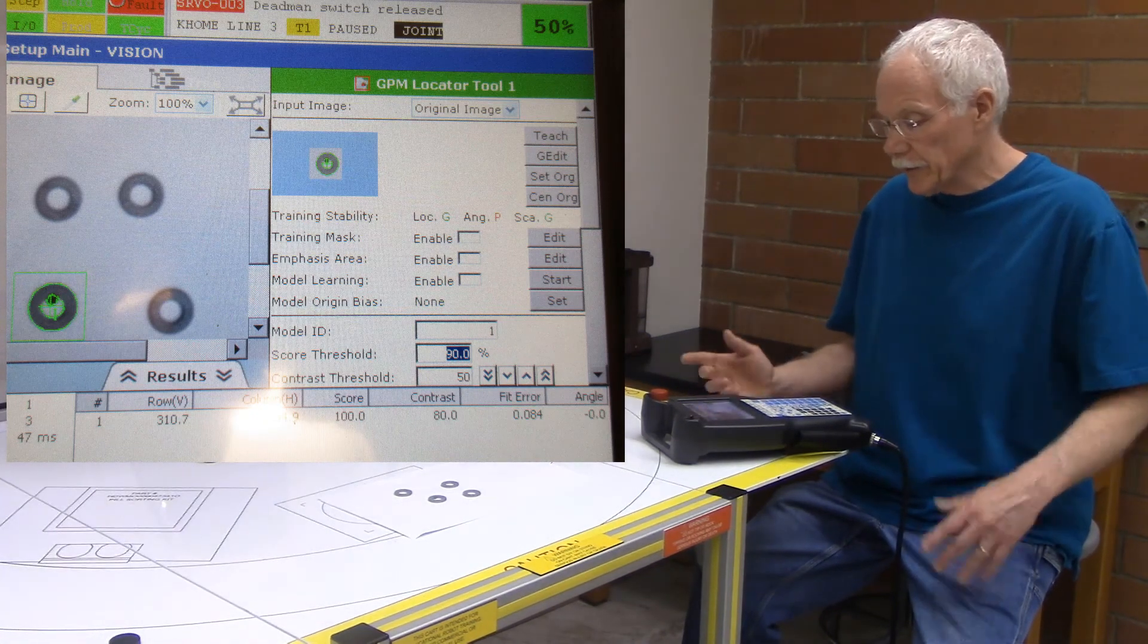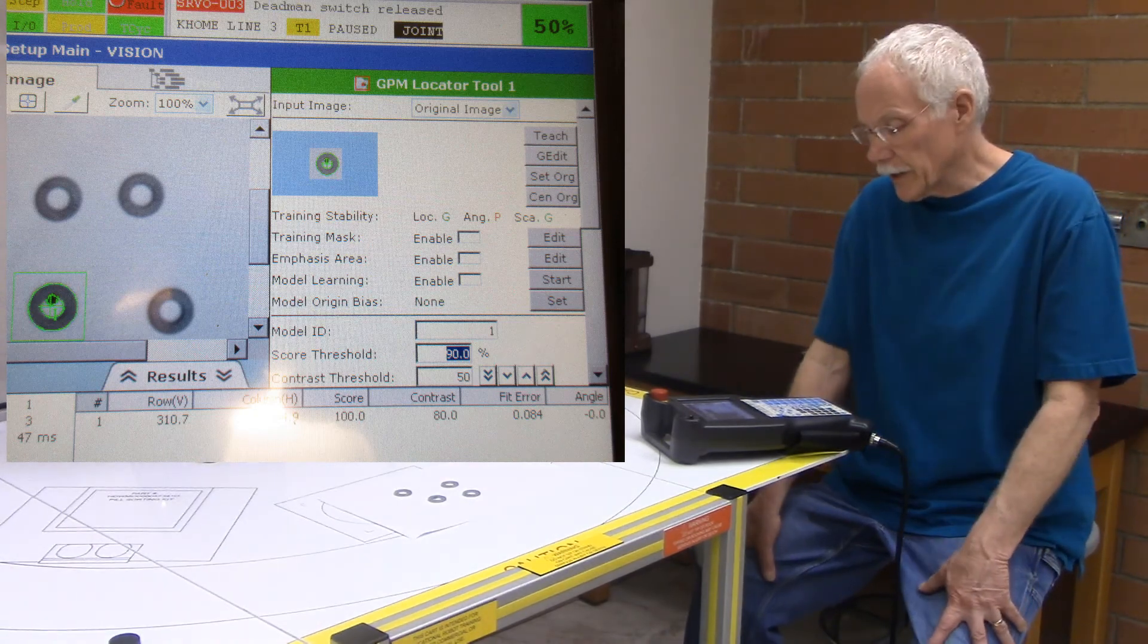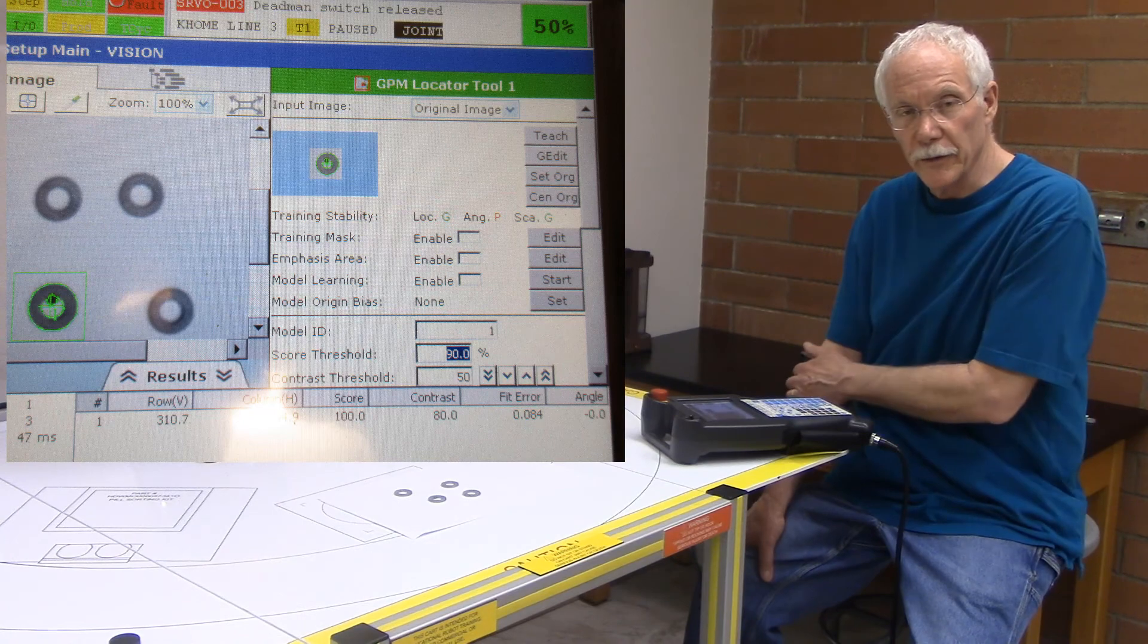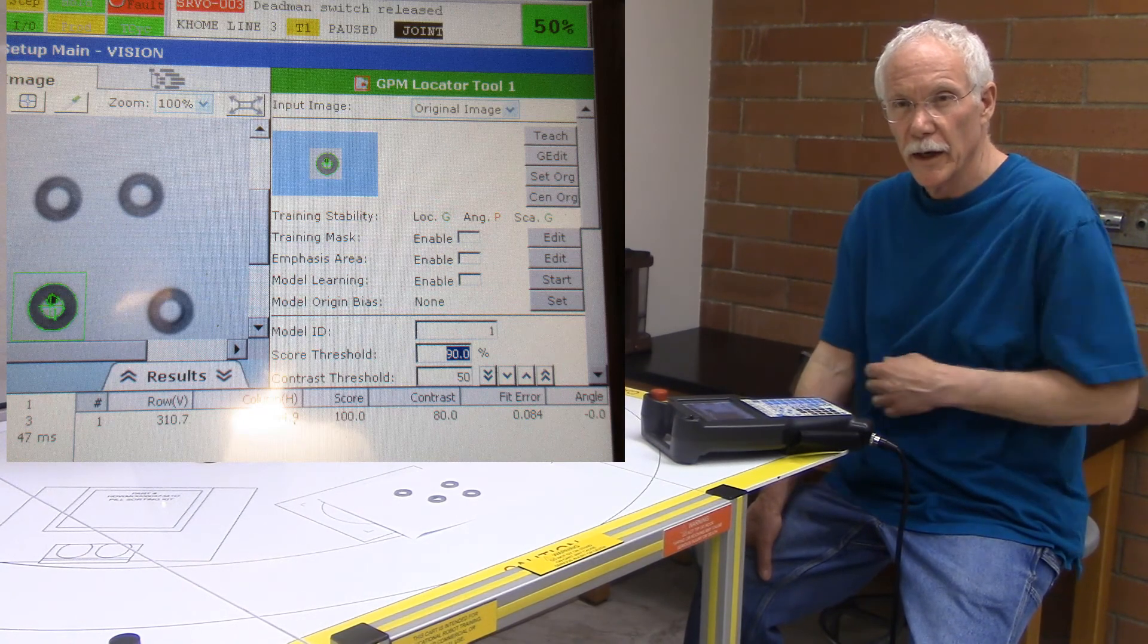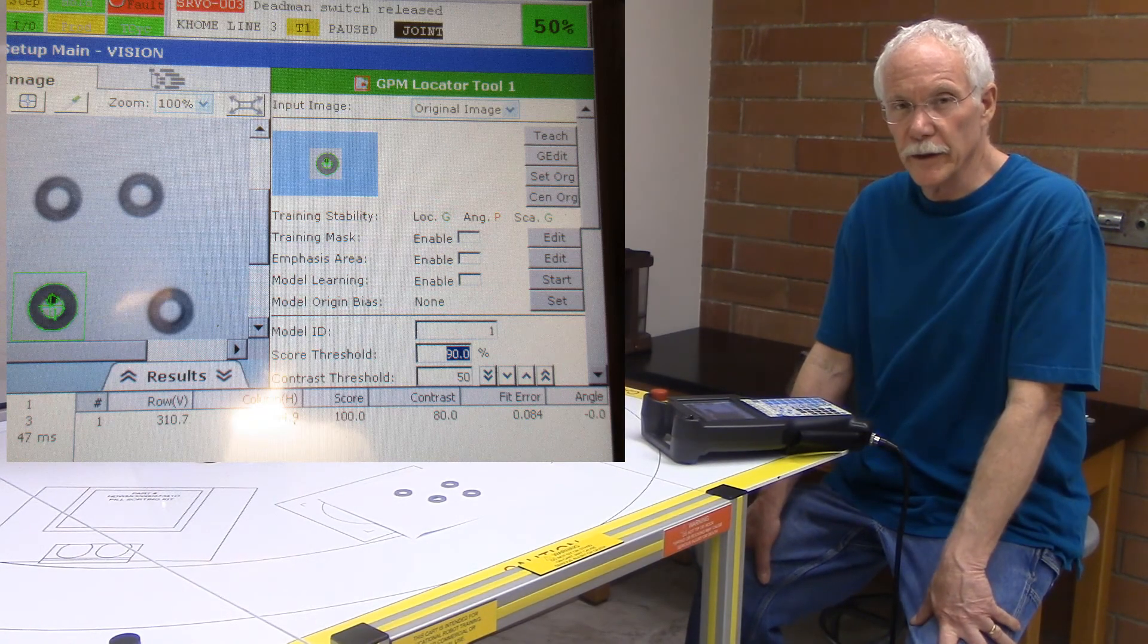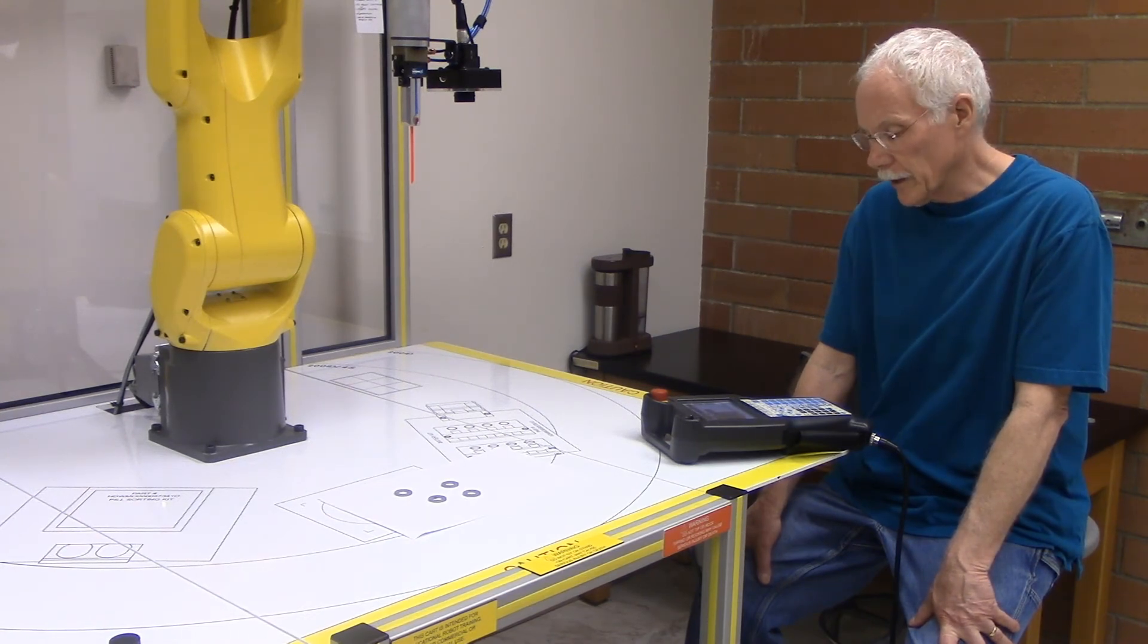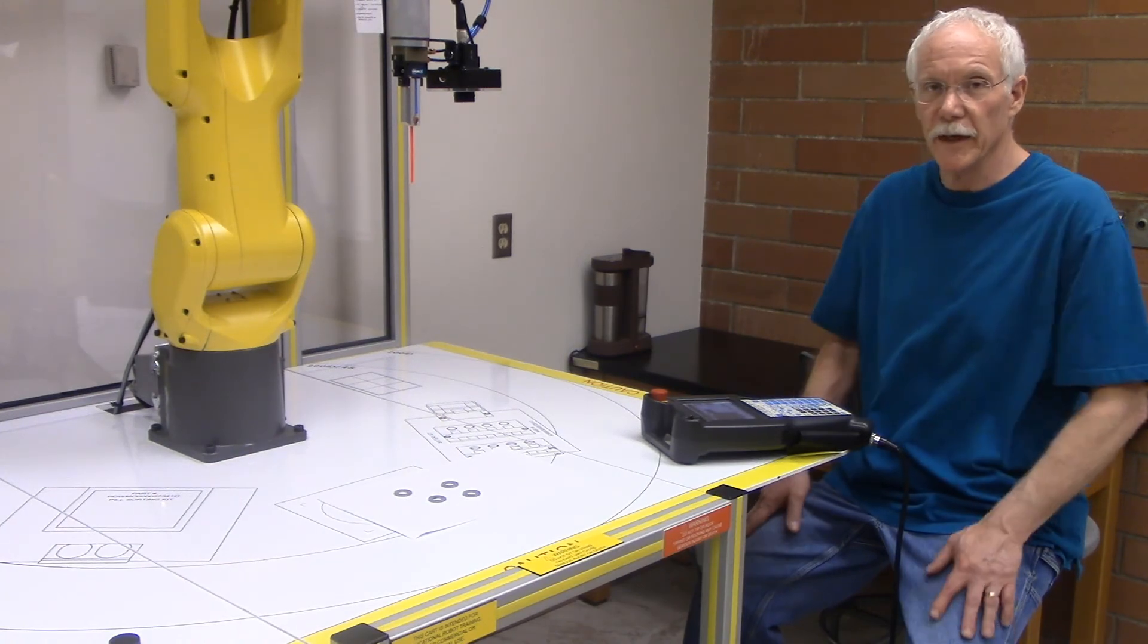So that's basically what we go through to create a simple single view visioning process. In the next video, we'll talk about how to create a program based on a single view vision process. Thanks so much.